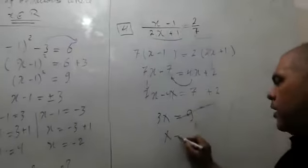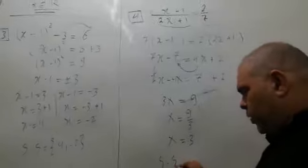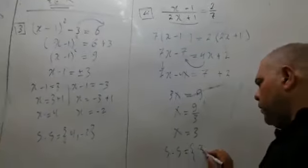So x equals 9 over 3, then x equals 3. Then you should say solution set equals 3.